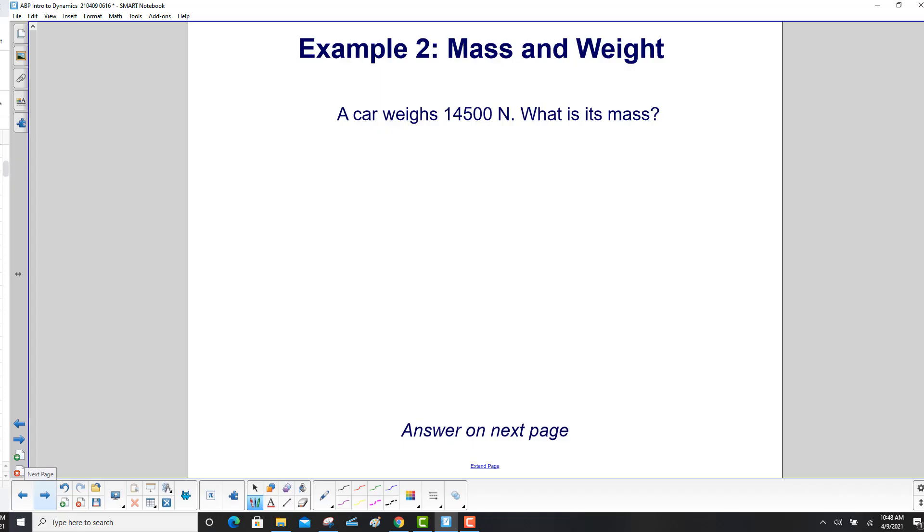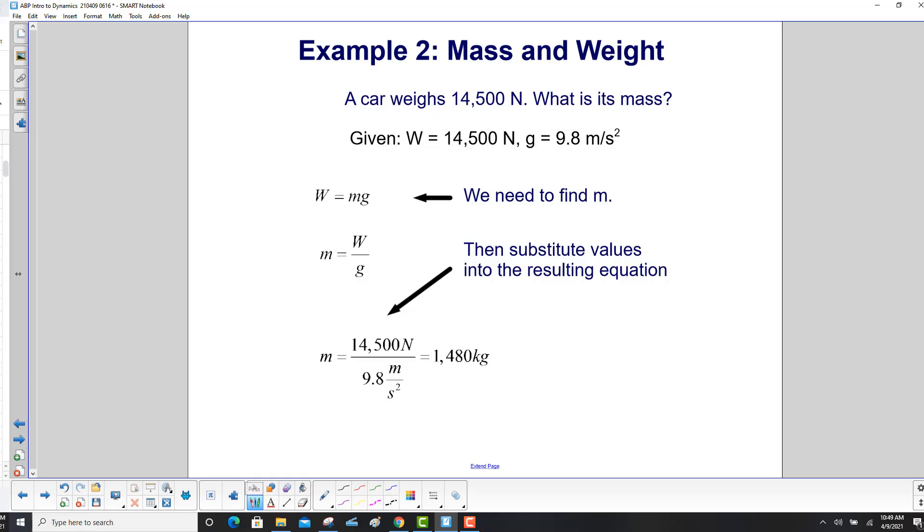A car weighs 14,500 newtons. What is its mass? We write our givens here. Here's the weight in newtons and here's g. Here's our weight equation. We need to find m, so we need to divide both sides of the equation by g. And then we put in the weight in the numerator, g in the denominator. And we get 1,480 kilograms.